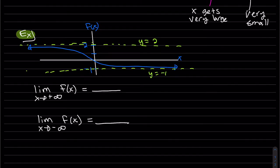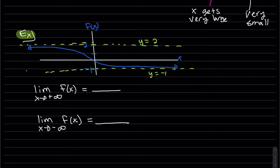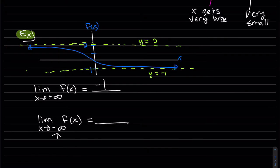Here's a function f(x), this blue line. The first question is: as x approaches infinity, what is the y value? We can see that as x is approaching infinity, it's getting closer and closer to y equals negative 1. So that's our limit — it's the right-side end behavior of our function.